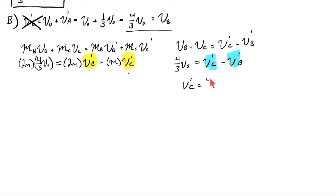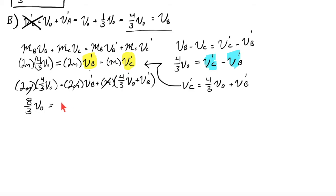we'll pick one of these arbitrarily. I guess I'll go with V prime of C to solve for. V prime of C is equal to four-thirds V0 plus V prime of B. Take that, put it in there. Let's get this thing finished. Two M, four-thirds V0 is equal to two M, V prime of B, plus M, this thing now. Four-thirds V0 plus V prime of B. All right, stand by while I simplify this. I'll start with crossing out some M's.